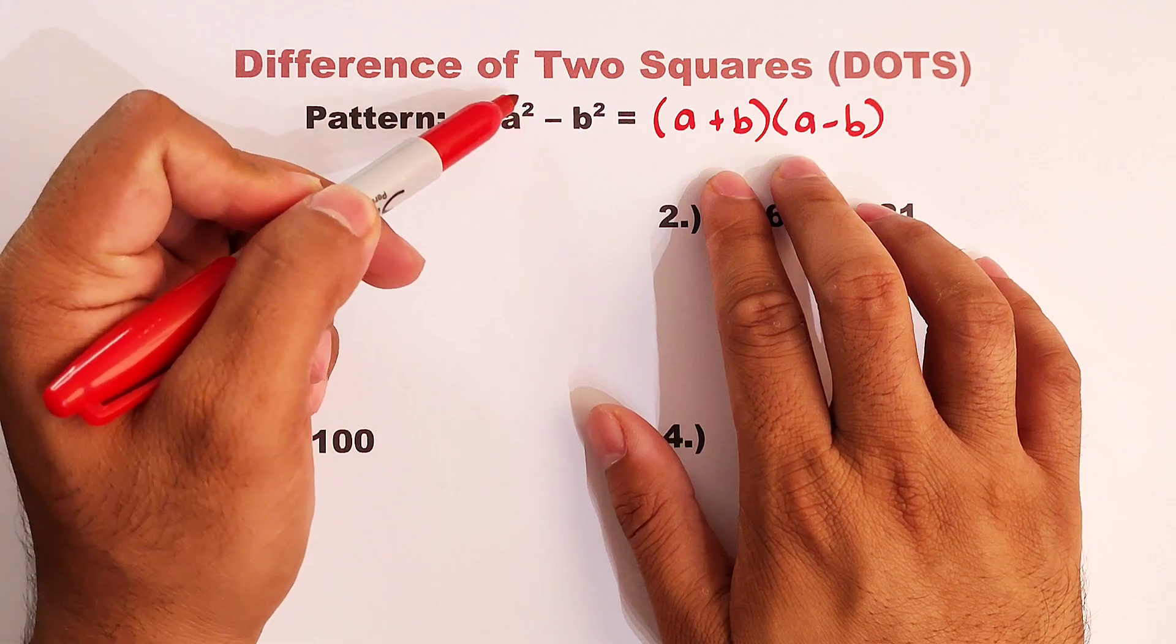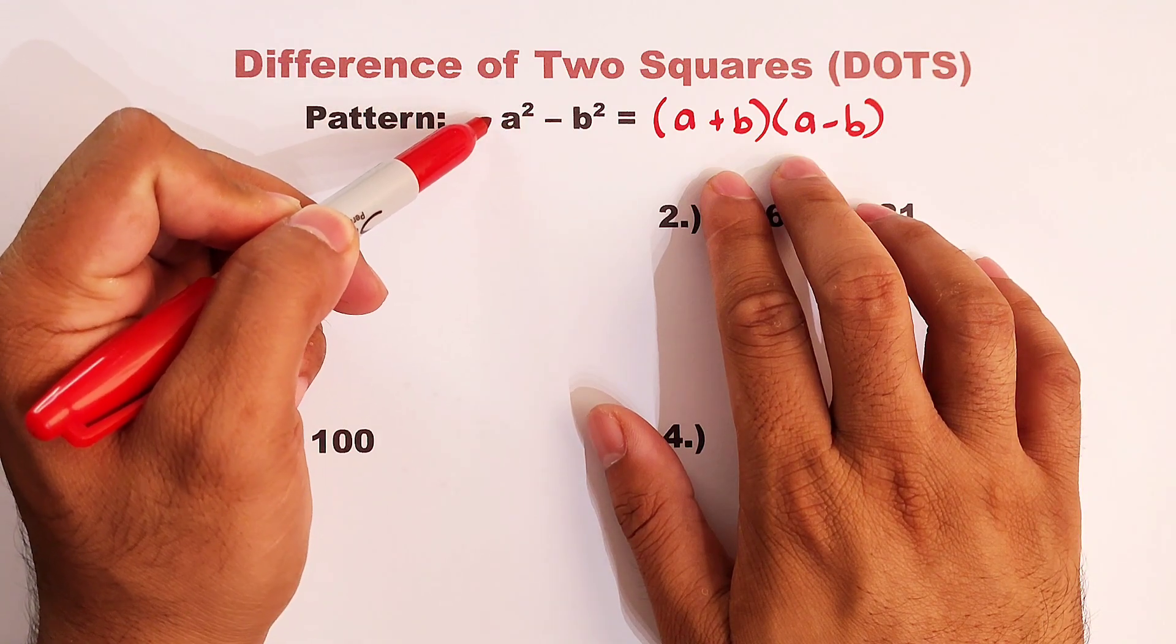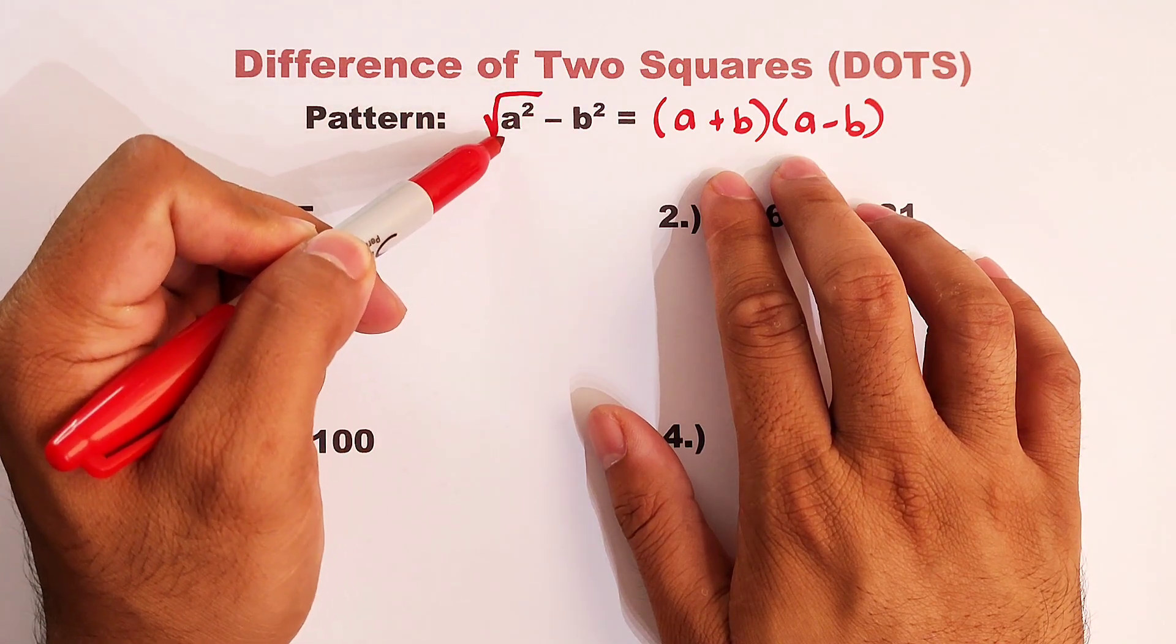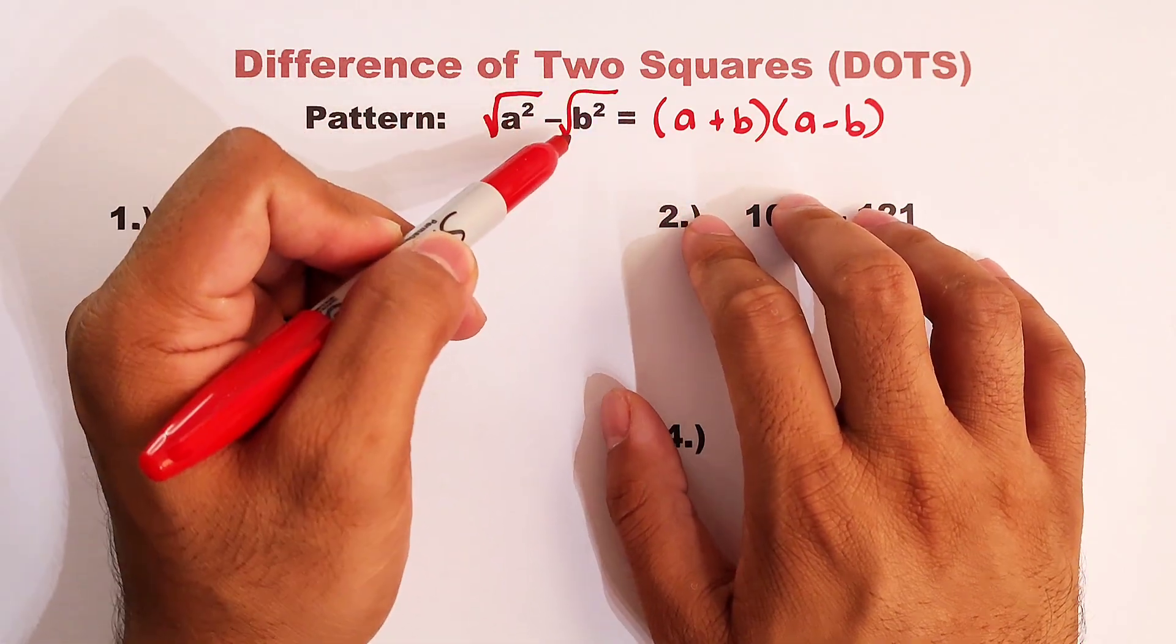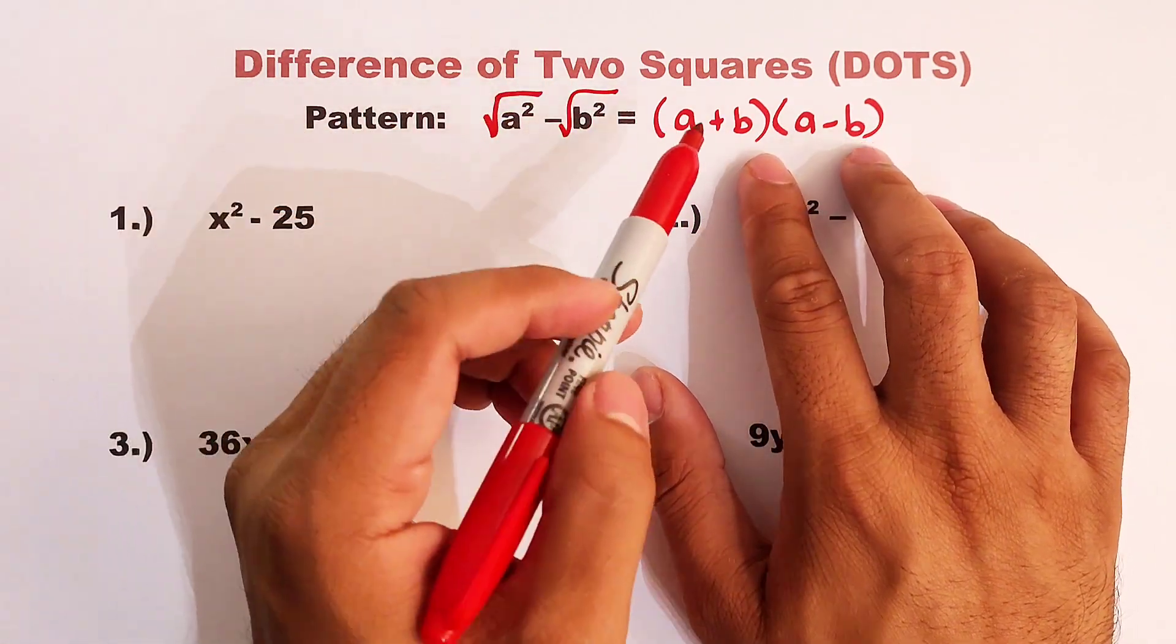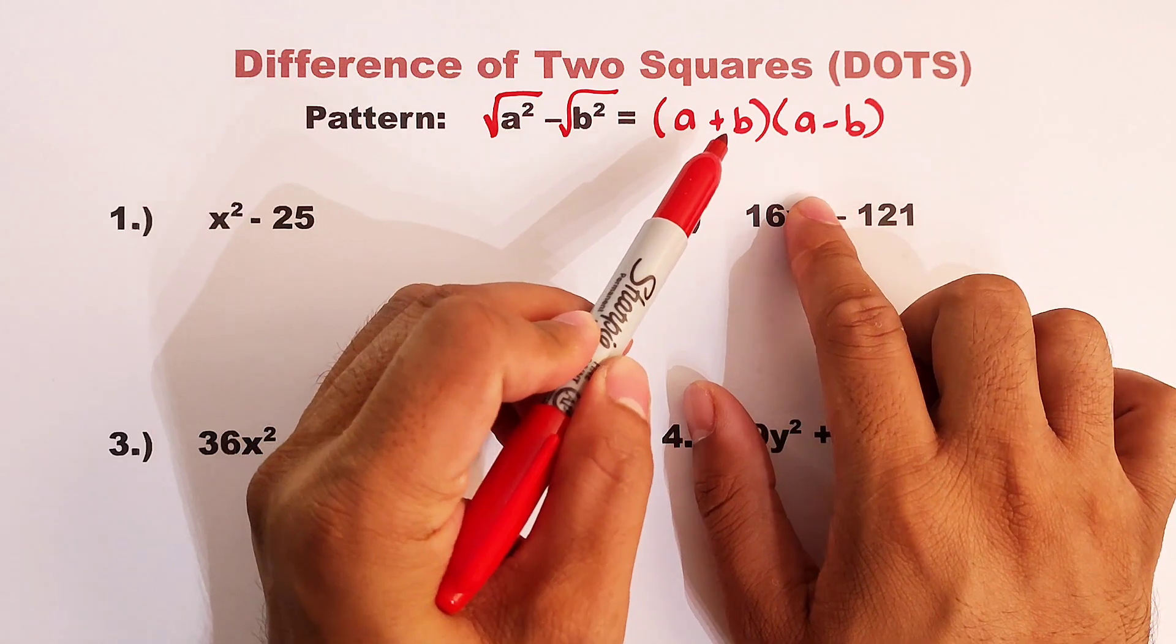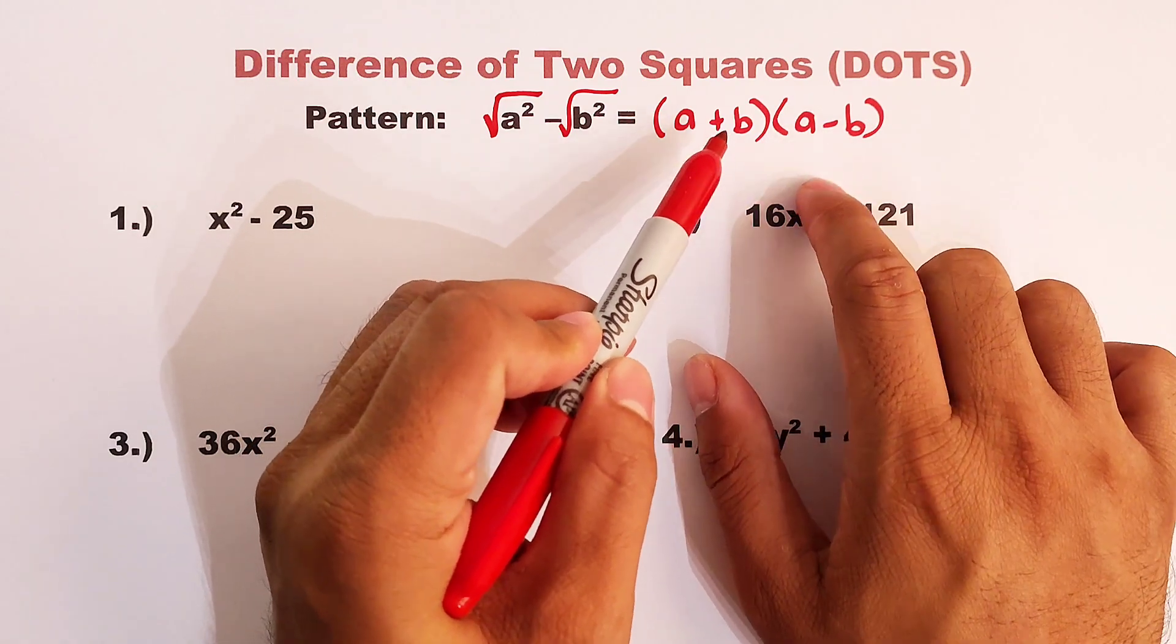First, get the square root of the first term. The square root of a squared is a. The square root of b squared is b. And we will put different signs, plus and minus or minus and plus.